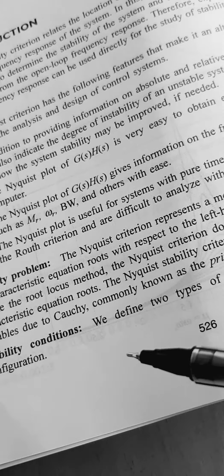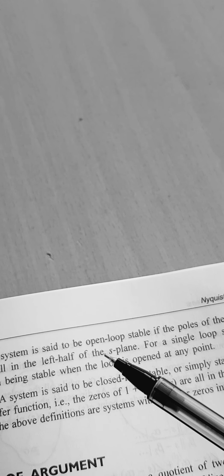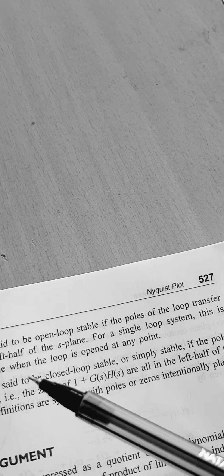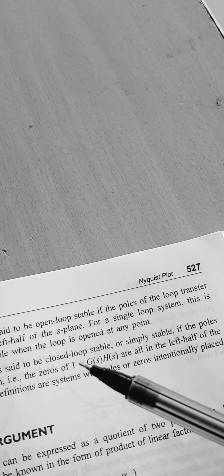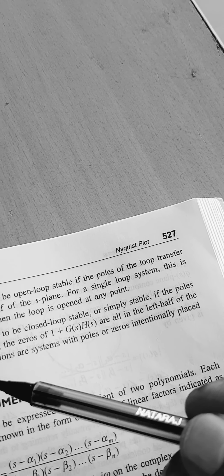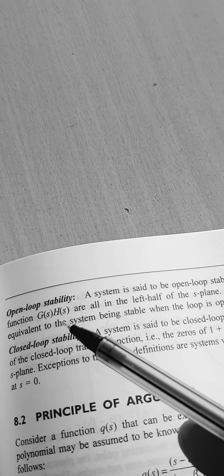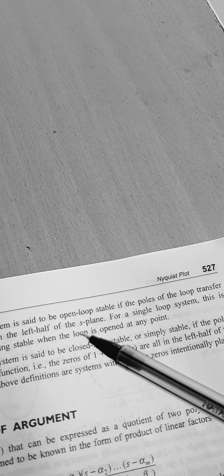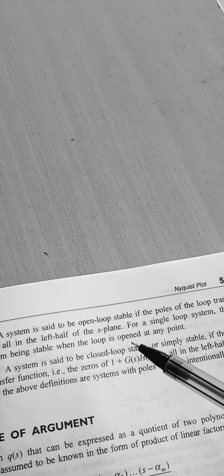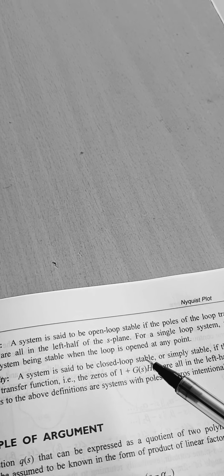We define two types of stability with respect to the system configurations. The first is open-loop stability: the system is said to be open-loop stable if the poles of the loop transfer function G(s)H(s) all reside in the left half of the s-plane. For a single-loop system, this is equivalent to the system being stable when the loop is open at any point.